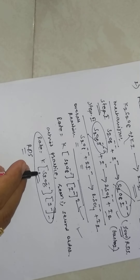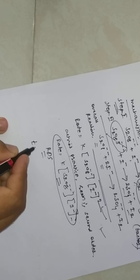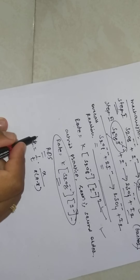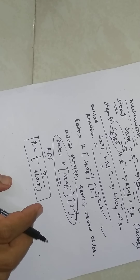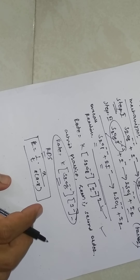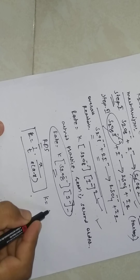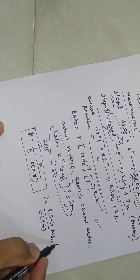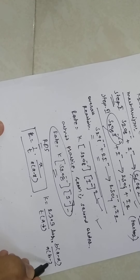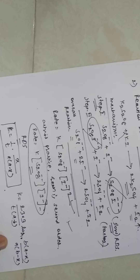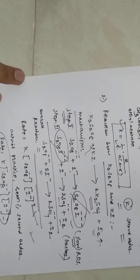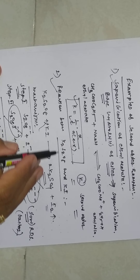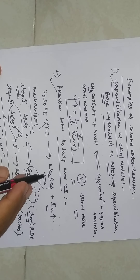The velocity constant can be given as K equals 1 over T times X over A(A minus X), and using the integrated form, K equals 1 over T times A(A minus X) over A·(B minus X). So these are the two examples for your syllabus: saponification of ethyl acetate, and the reaction between K₂S₂O₈ and KI. We will continue the remaining part in the next lecture. Thank you.